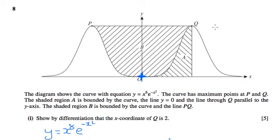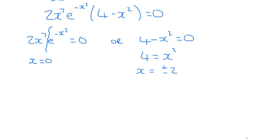So if we go back to the graph, we can see that Q is positive, so Q must be the positive 2 for the x-coordinate. Not the -2, which will be P's coordinate.